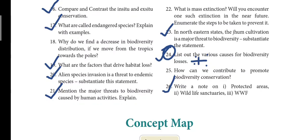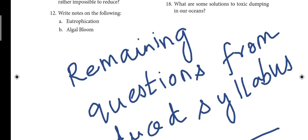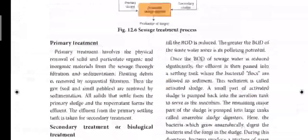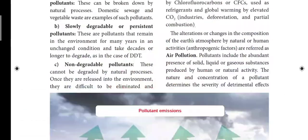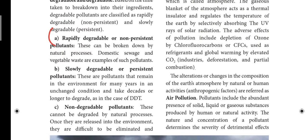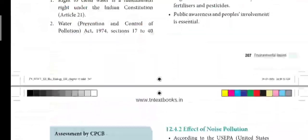Now Lesson 12 — the remaining questions from the reduced syllabus. A major portion of this lesson is deleted, so only one or two questions will come from this lesson. Classification of pollutants: rapidly degradable, slowly degradable, and non-degradable — explaining all three is a three-mark question.